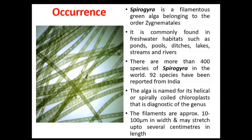There are more than 400 species of Spirogyra in the world, and about 92 species have been described from India. The alga is named for its helical or spirally coiled chloroplasts, which are diagnostic of this genus. In the image, you can see the characteristic spirally coiled chloroplasts in the filaments, which allow the alga to be easily identified.